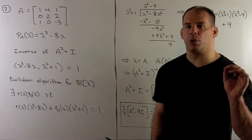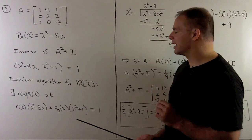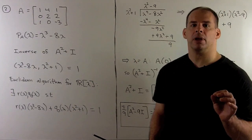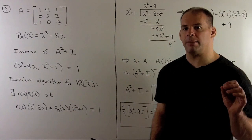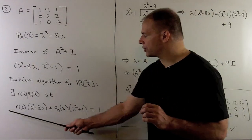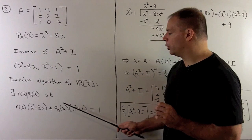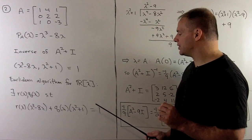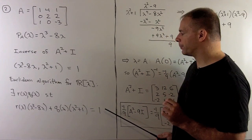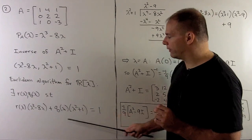If we convert this to a matrix equation, so I'll replace lambda with A, multiply any constant terms by the identity matrix. This term goes to zero by Cayley-Hamilton, and we're left with Q of A times A squared plus the identity matrix is equal to the identity matrix. So, our inverse is Q of A.